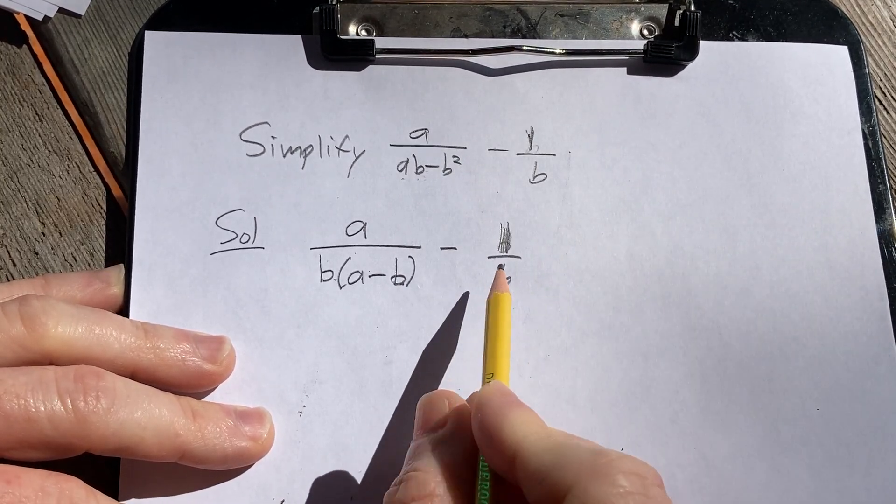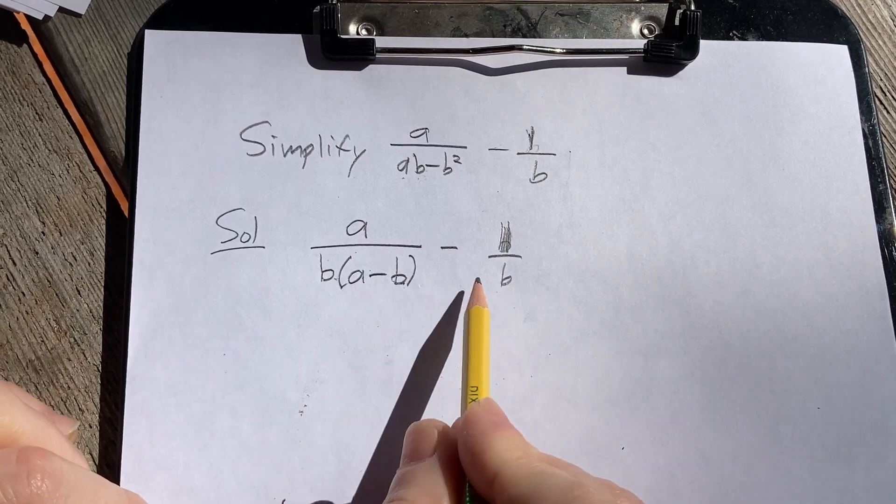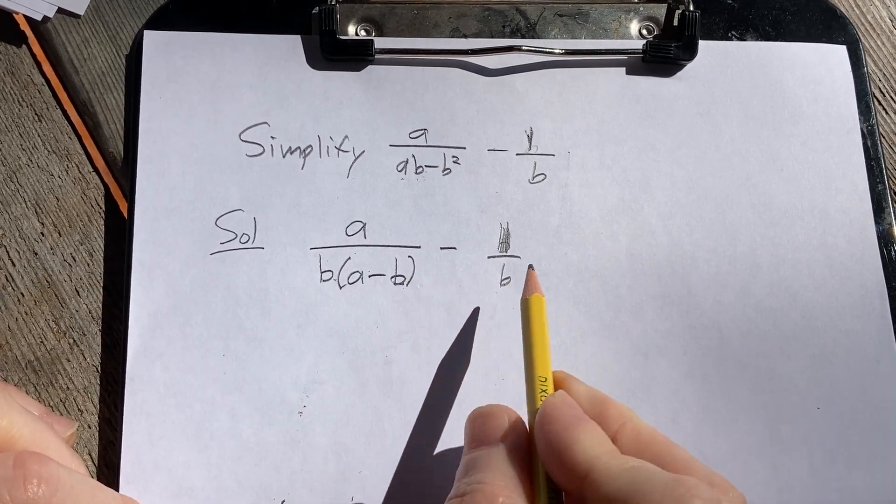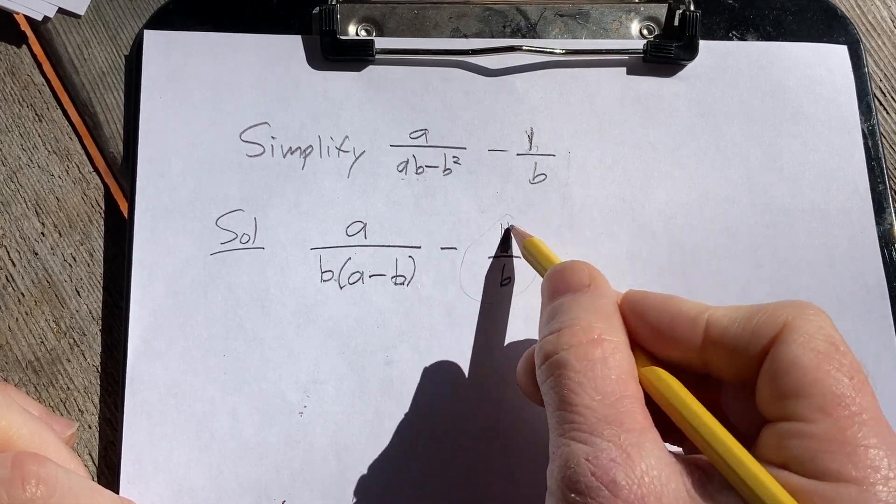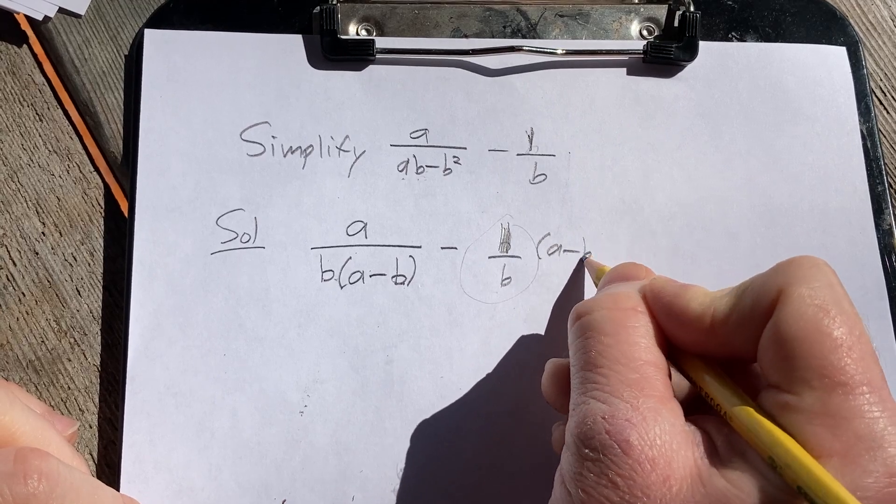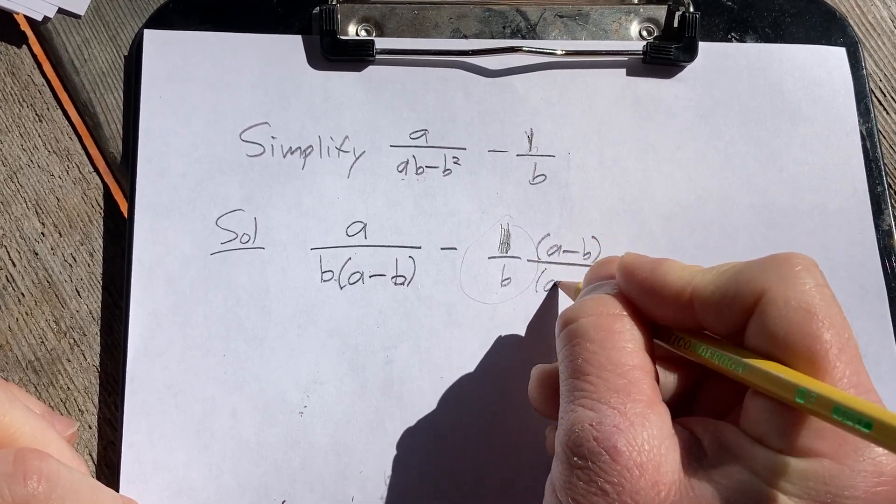Okay, that's a 1 there. And the issue here is that the denominator is not the same. So what we can do is find a common denominator by multiplying this expression by 1. We can multiply this by a minus b over a minus b.